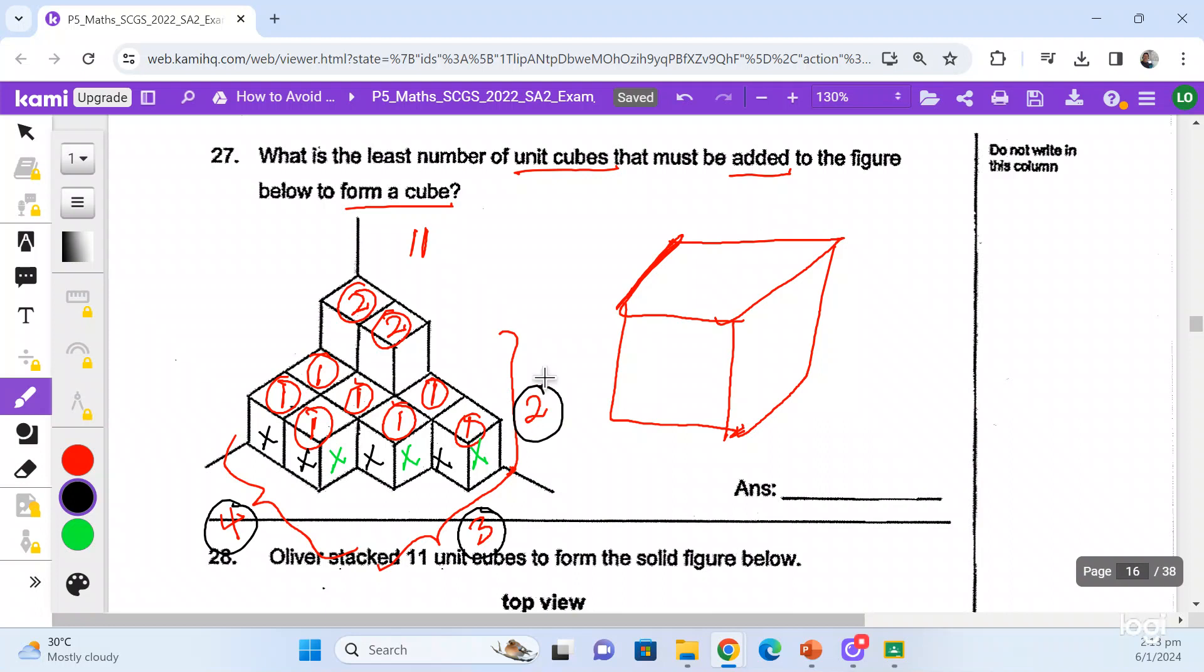So then what do I do? I look at the biggest number, which is four, and I actually put over here. And then I do the same for all the other sides of the bigger cube. So which means that how many small cubes do I need to form this bigger cube?